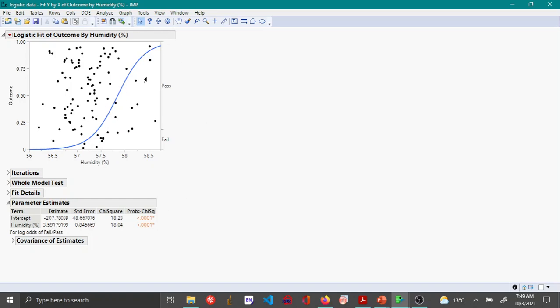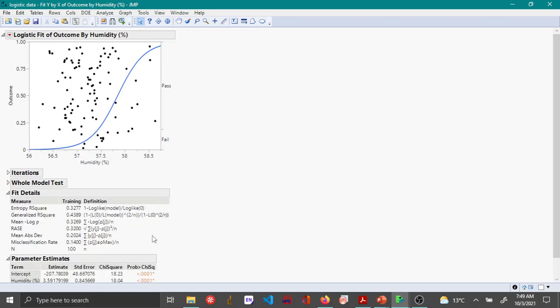Under fit details you have something very important - the misclassification rate which has a value of 0.14. What this means is your logistic model that you have built misclassifies 14% of the times. If you use this model 100 times, then 14 times this model will wrongly classify the values that you are trying to predict.